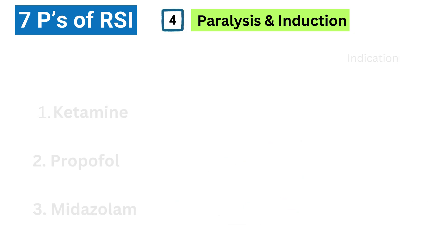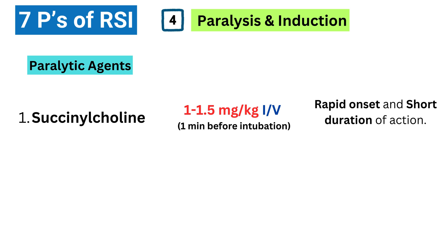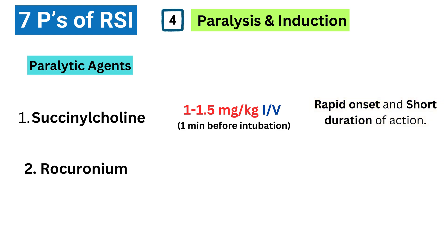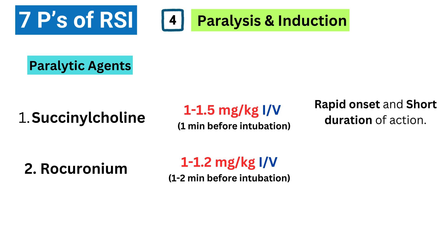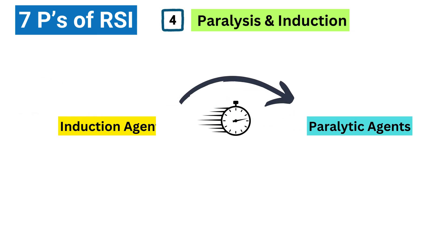Right after we give the induction agent, we give a paralytic to relax the muscles. We have a couple of main options. Succinylcholine is a very fast-acting paralytic — it works within about a minute, and it wears off quickly too. This is great for RSI because it allows us to intubate quickly, and if we have trouble getting the tube in, the patient will start breathing again on their own relatively soon. However, it can cause some side effects like muscle twitching and changes in potassium levels, so we have to be careful. Rocuronium is another paralytic that works a little slower than succinylcholine but lasts longer — it's a good alternative if we can't use succinylcholine. The timing of these medications is crucial; the paralytic is typically given immediately after the sedative.